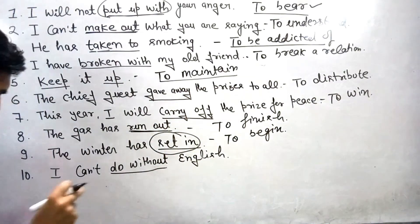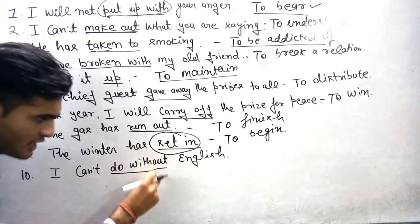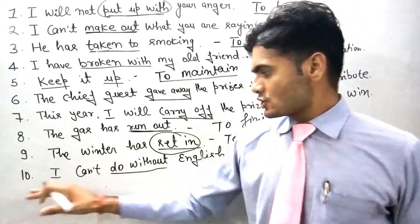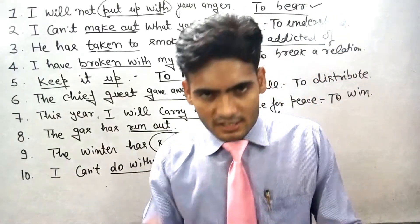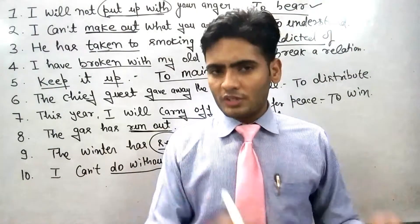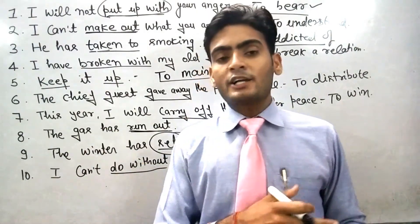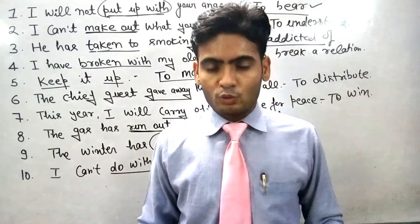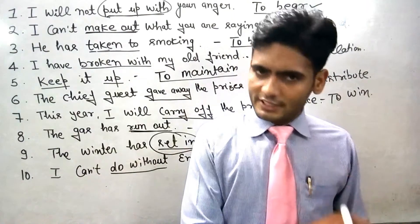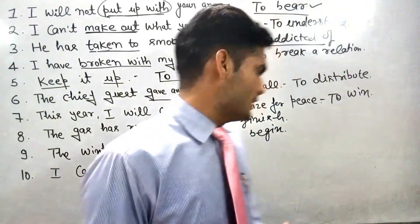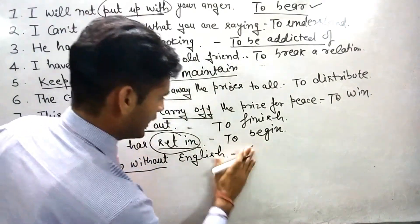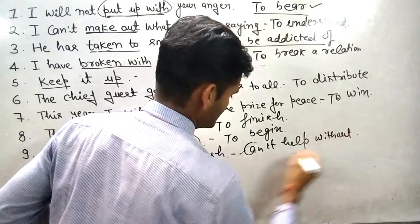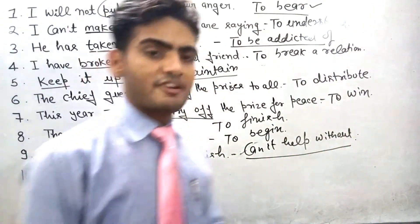दसवाँ और आखिरी sentence है: 'I can't do without English.' Do without का मतलब होता है किसी चीज के बिना काम न चलना। I can't do without English — मेरा काम English के बिना नहीं चलता। जैसे कुछ लोगों का काम tea के बिना नहीं चलता — they can't do without tea. So do without means: किसी चीज के बिना काम न चल पाना — can't help without something.